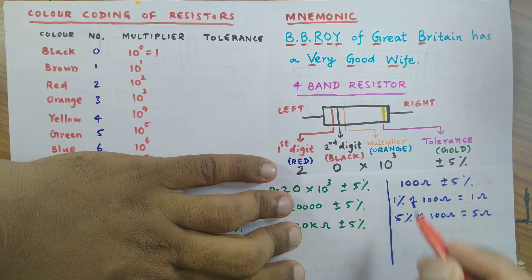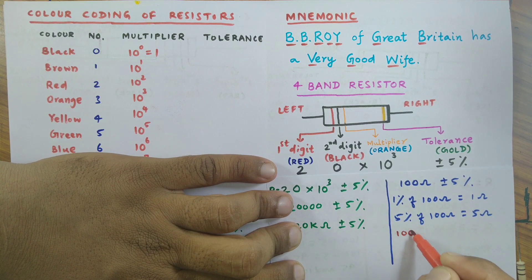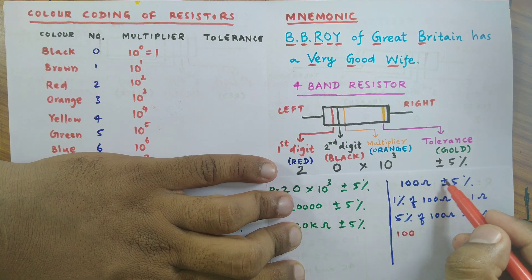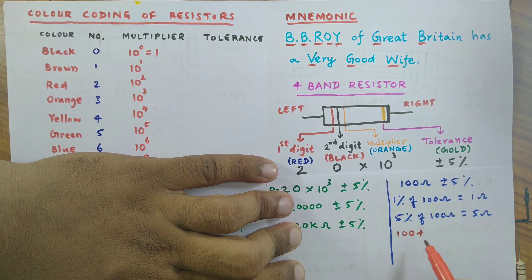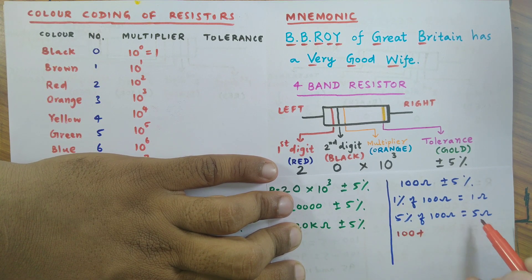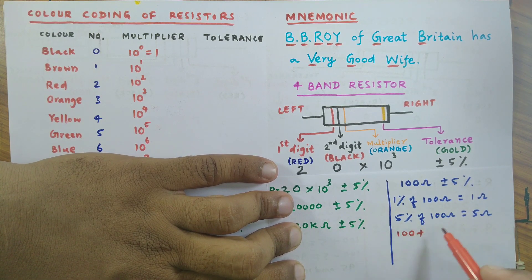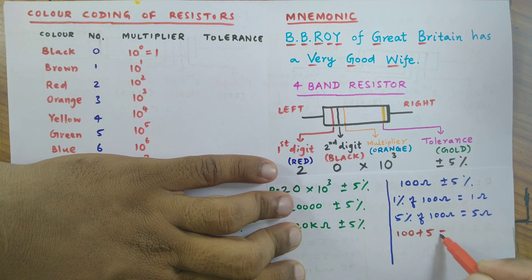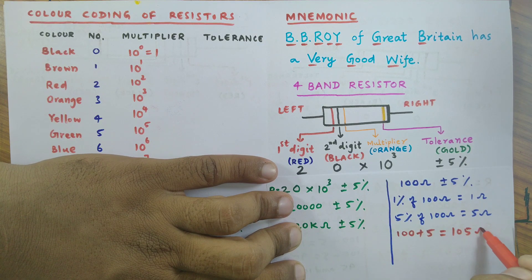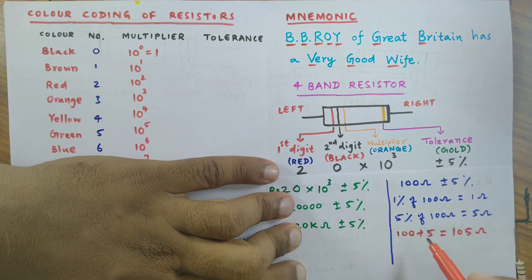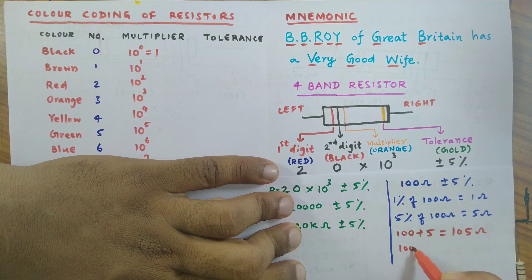Now I take 100 here, then I take the plus from here. I add 5 ohm, which is five percent of 100 ohm, and I obtain 105 ohm.